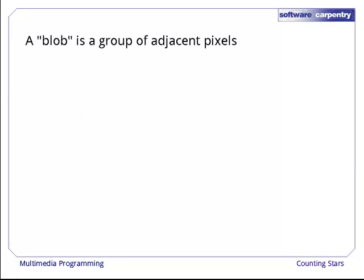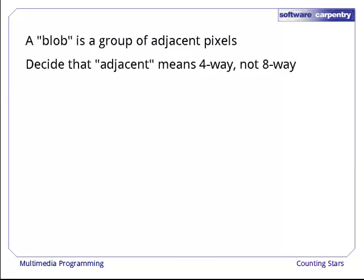A blob is just a set of pixels that are adjacent to one another. We could use several rules to determine what adjacent means, but the simplest is 4-way connectivity. Pixels are adjacent if they are directly above, below, left, or right from each other, not if they are touching diagonally.